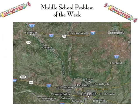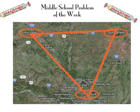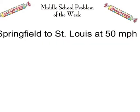Well, we've also found another triangle. The cities of Springfield, Illinois; St. Louis, Missouri; and Hannibal, Missouri form an equilateral triangle that, with a little rounding, shows that each side is 100 miles long.